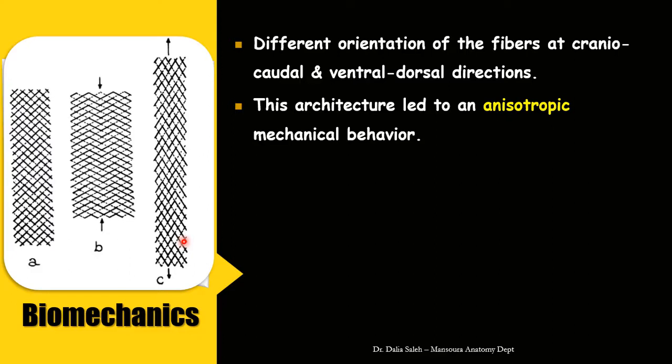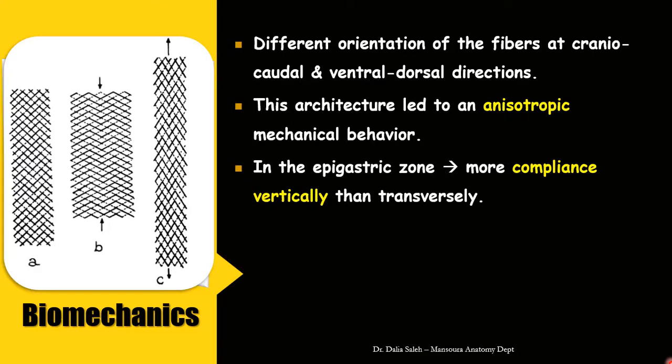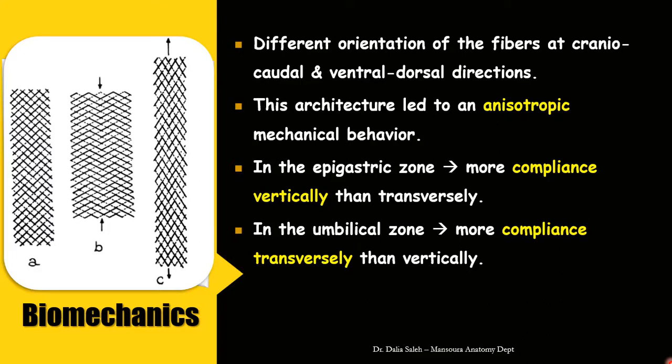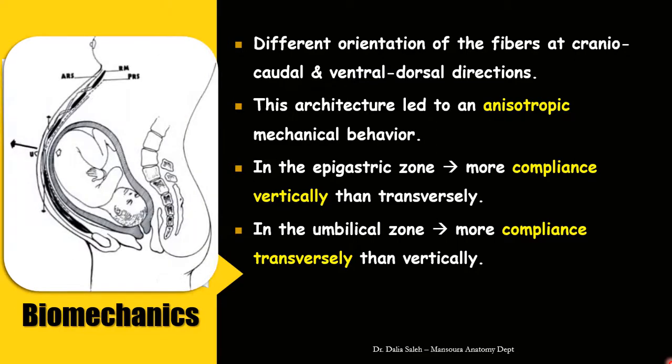In patients with chronic distension or chronic increase in intra-abdominal pressure, there will be downward displacement of the umbilicus. In the epigastric zone, there is more compliance in the vertical direction than transverse, while in the umbilical zone there is more compliance in the transverse direction. Chronic increase in intra-abdominal pressure, as in multiple pregnancies, applies force over the umbilical region, stretching aponeurotic fibers in both transverse and vertical directions, predisposing to umbilical and paraumbilical hernias.